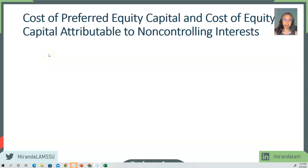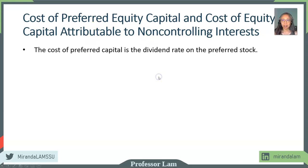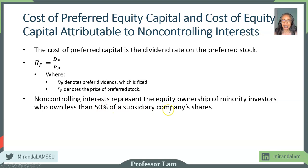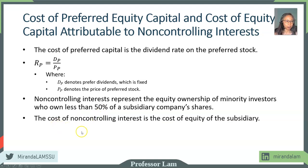In addition to debt, we also have other forms of equity. One is preferred stock, and the other is non-controlling interest. The cost of preferred stock is simply the dividend rate on preferred stock: the preferred dividend divided by the price of preferred stock. For non-controlling interest, which represents minority ownership of less than 50%, the cost is simply the cost of equity for the subsidiary, computed the same way as cost of equity but applied to the subsidiary.